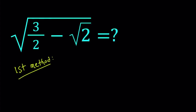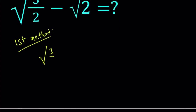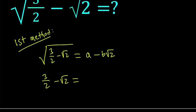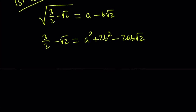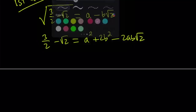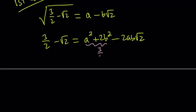For the first method, I'm going to set this expression equal to a minus b√2, where a and b are rational numbers. So, square both sides. On the right-hand side, we get a² plus 2b² minus 2ab√2, if you expand (x minus y)². Then, comparing the right-hand side and the left-hand side, we can say that a² + 2b² needs to equal 3/2, and 2ab needs to equal 1.